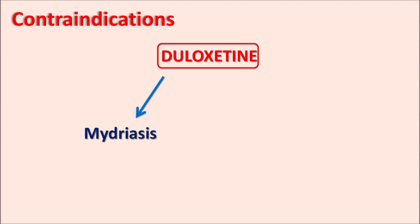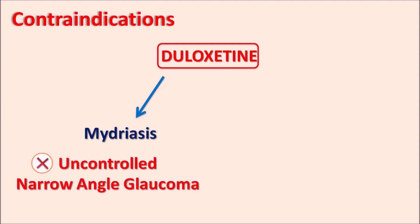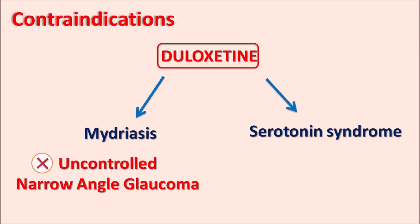What are the contraindications? Duloxetine can increase mydriasis — pupillary dilation — which may increase intraocular pressure, so it is contraindicated in uncontrolled narrow-angle glaucoma. Similarly, this drug can precipitate serotonin syndrome, so it is contraindicated with MAO inhibitors, which inhibit the metabolism of 5-HT and thereby further increase the risk of serotonin syndrome.